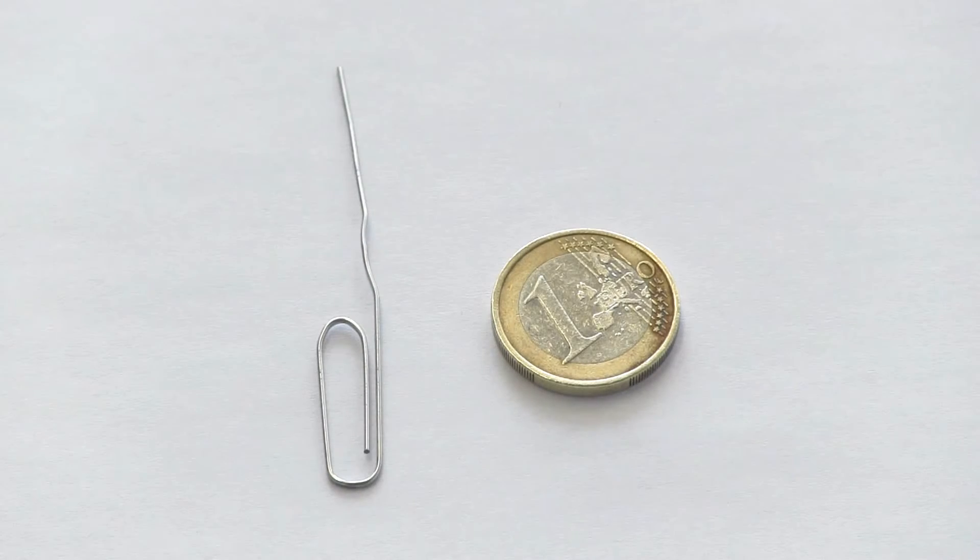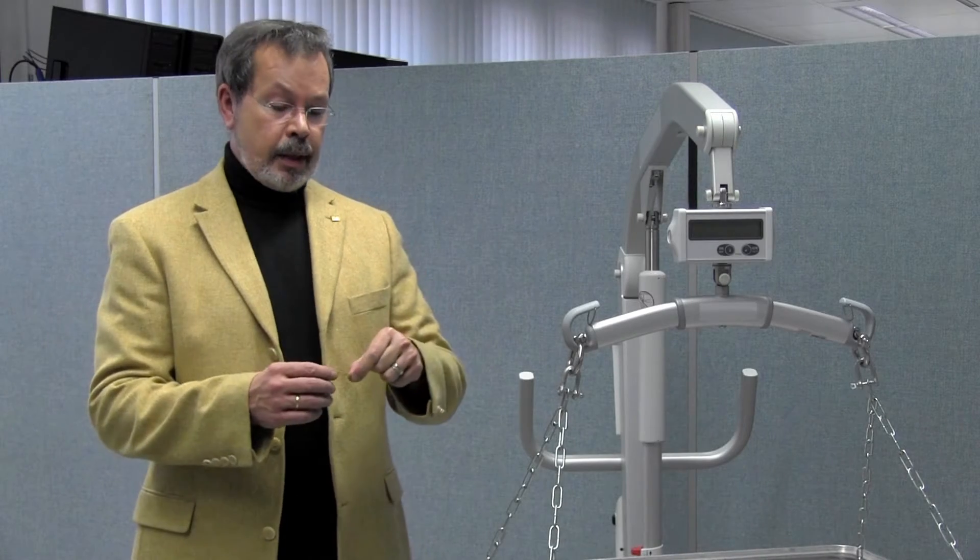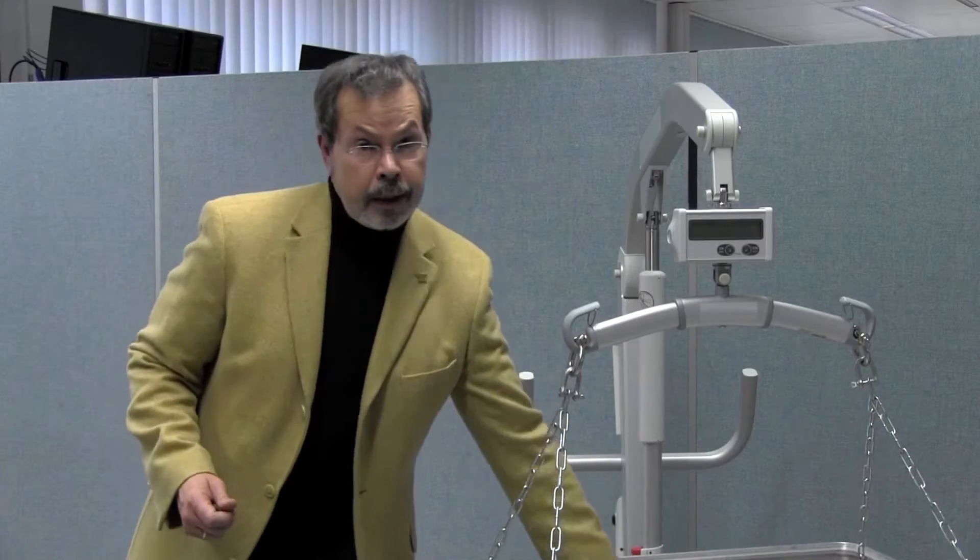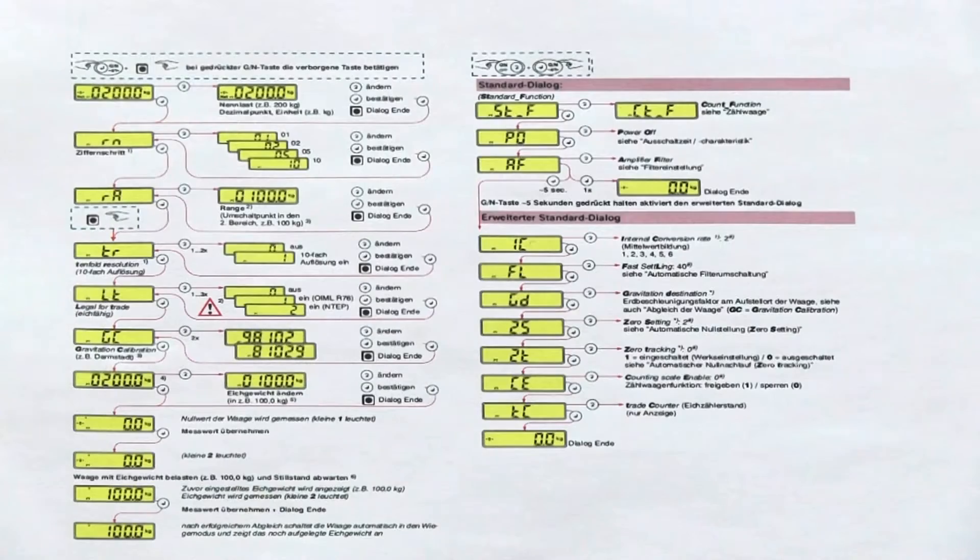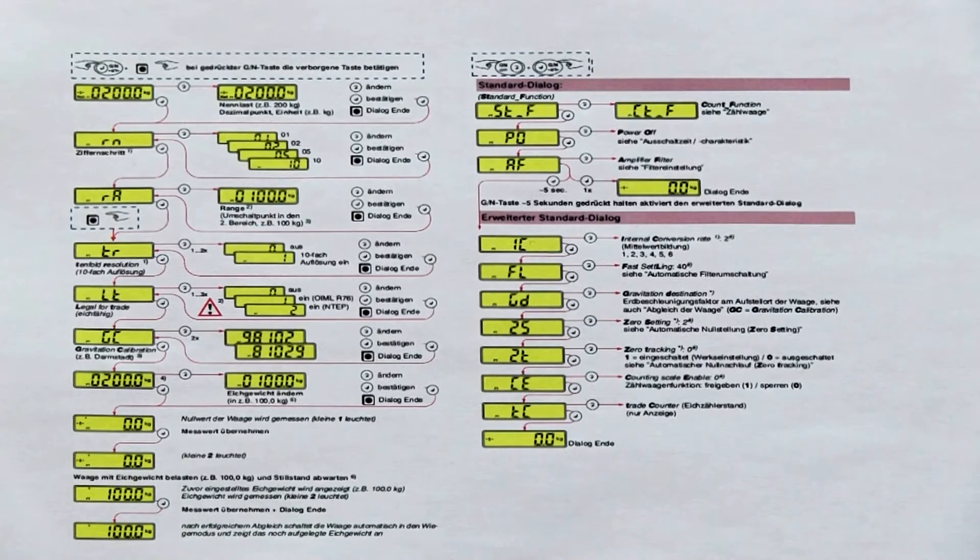The only additional items you will need are a coin and a slightly modified paper clip, which you should bend open. It will also be helpful to become acquainted with the operating instructions, which contain a detailed explanation with all the steps to follow for calibration.